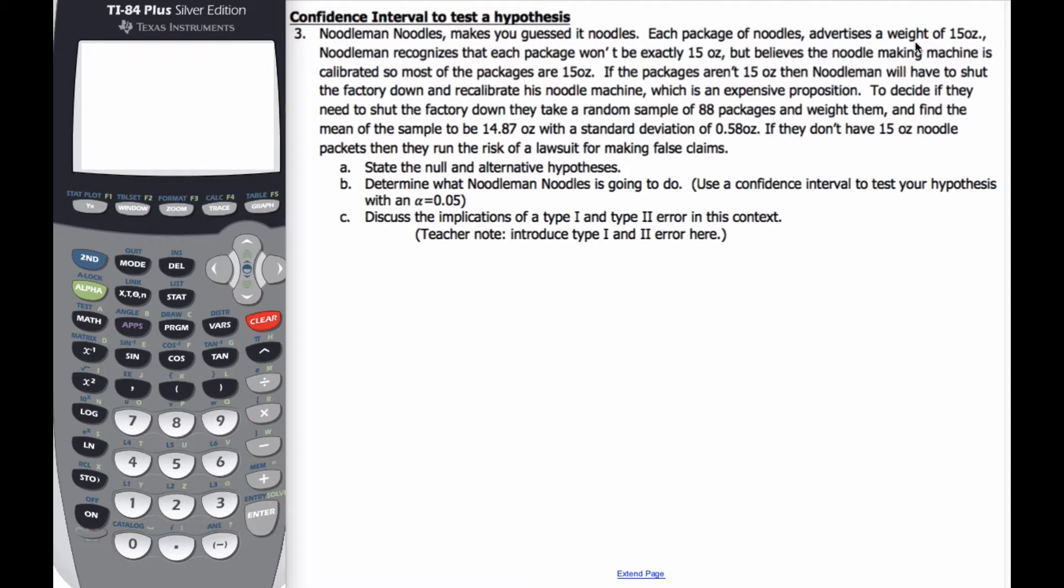Each package of noodles has an advertised weight of 15 ounces. Noodleman knows that every package won't exactly be 15 ounces, but believes the noodle making machine is calibrated so most of the packages are. If the packages aren't 15 ounces, Noodleman will have to shut down the factory and recalibrate his noodle machine, which is expensive.